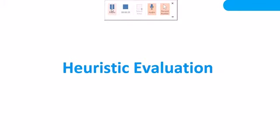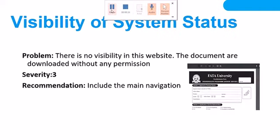Next is a holistic evaluation — visibility of system status problem. There is no visibility in this website; the documents are not downloading without any permission, so it is severity three. My recommendation includes the main navigation bar. I worked on the navigation bar — there was no navigation bar in the previous website, so I created it, and now it requires permission to do any action.